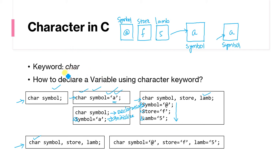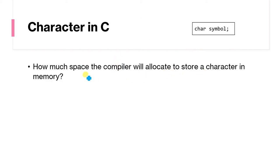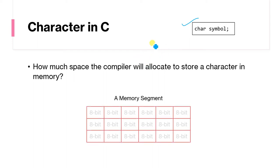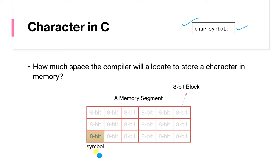Now we understand how to declare and store character variables. The next question is: how much space does the compiler allocate to store a character in memory? Every compiler allocates one byte — that is 8 bits — to store a character. In the memory segment, each block is an 8-bit block. So when we declare char symbol, one byte of space is allocated, and the name of that byte is 'symbol'.